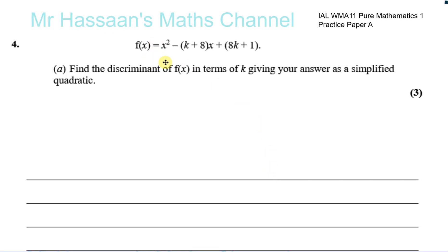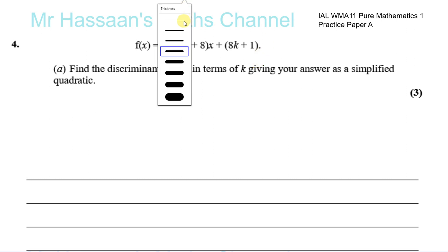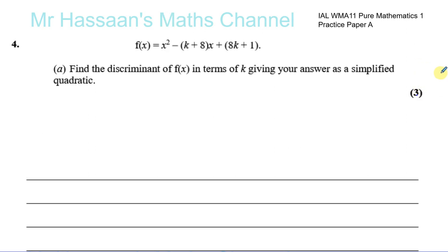Now for question 4 from Practice Paper A. This is for the Pure Mathematics I International A-Level IAL syllabus — some practice questions given the lack of past papers for this new specification. Question number 4: you have been given an equation f of x equals x squared minus (k plus 8)x plus 8k plus 1. We need to find the discriminant of f of x in terms of k, giving the answer as a simplified quadratic.